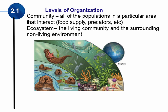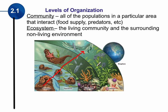Going back to our original picture: we started with a single sea otter — a single organism — then worked our way up to a population of multiple sea otters. We can look at a community: the sea otters along with other living components. And then we consider the ecosystem, which includes the living and non-living. In this picture, the non-living would be the water and the sun. As we work our way up the levels, we get more complex.